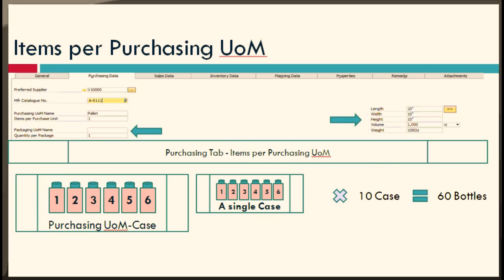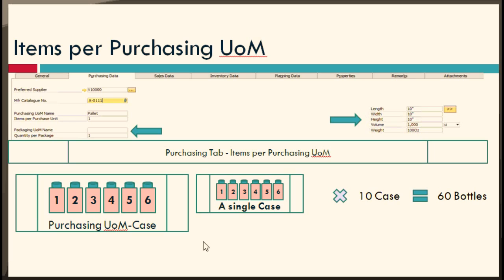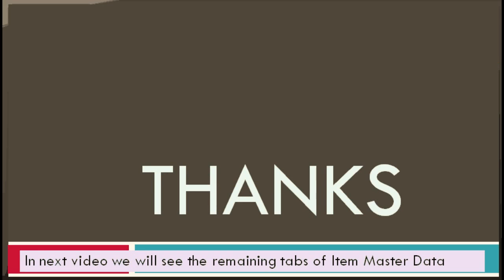Moving to quantity per package: you can enter the package type and define the quantity of purchasing units of measure per package. For example, if you are buying a pallet of soft drinks, the case is your purchasing unit of measure and the pallet is your purchasing package type. If each pallet contains 10 cases, then 10 is the quantity per package, meaning in total you are purchasing 60 bottles. In the next video we will see the remaining tabs of the item master data.